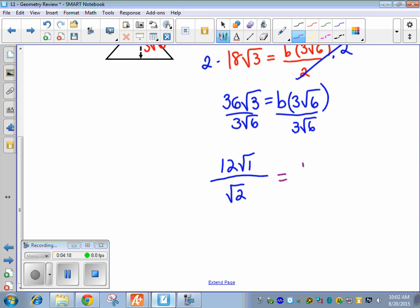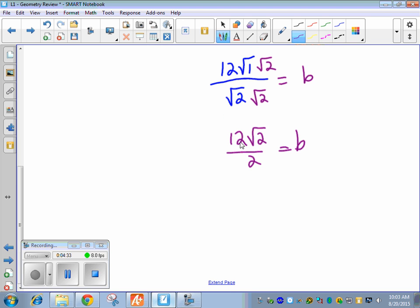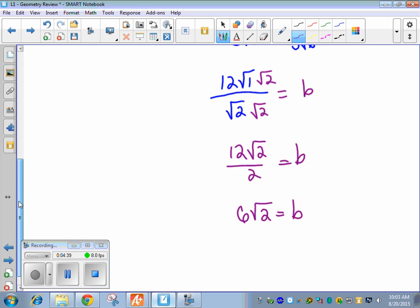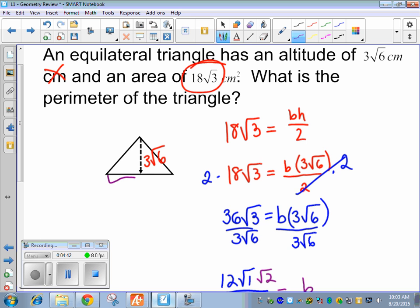And then we have to rationalize the denominator. So we're going to multiply by the square root of 2 over the square root of 2. So we get 12 root 2 over 2. And this simplifies again. The 12 and the 2 here, this becomes 6 root 2. So we found the base. So this distance is what we just found. But it says, what is the perimeter of the triangle?